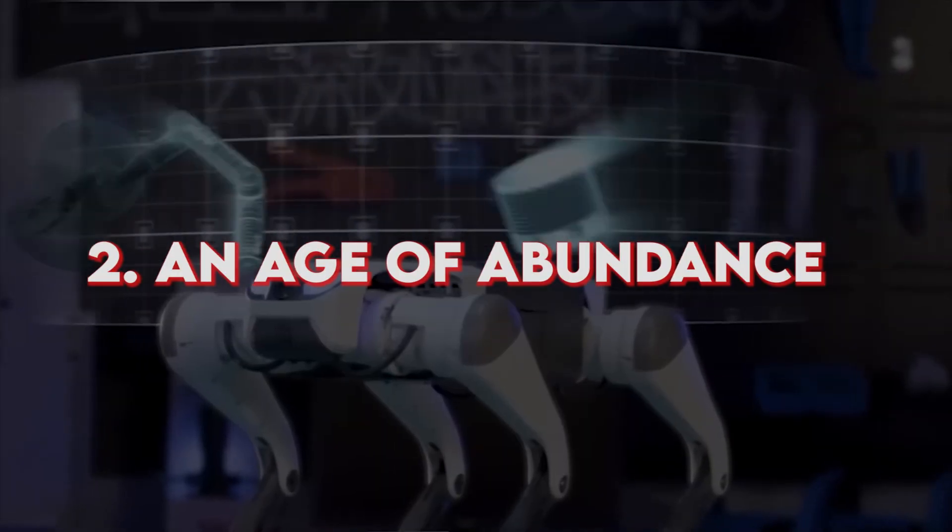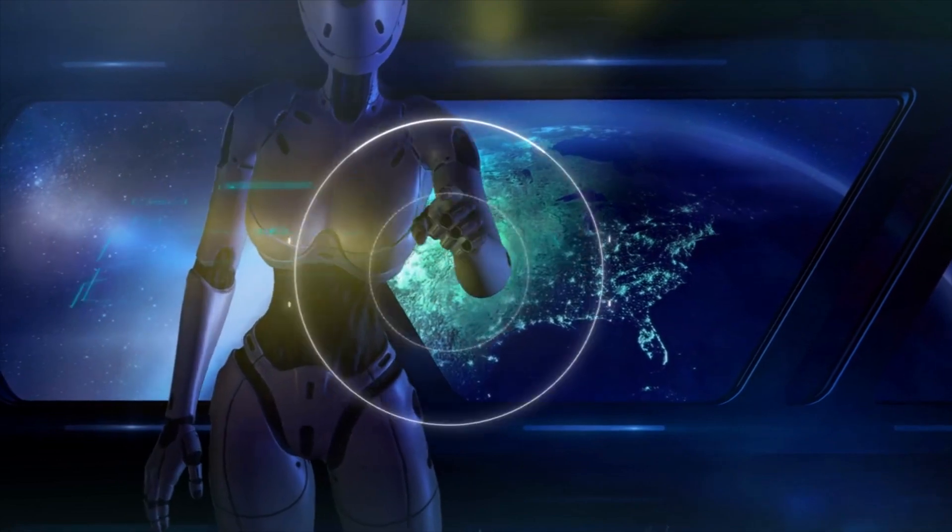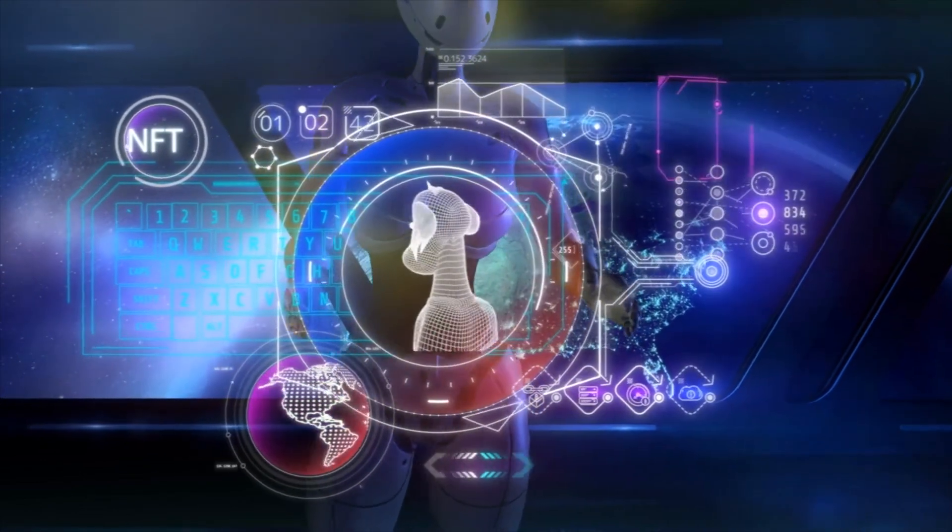Number two, an age of abundance. Musk envisions AI ushering in an age of abundance by reducing the cost of goods and services. He believes that AI can improve access to essential resources, positively impacting society.